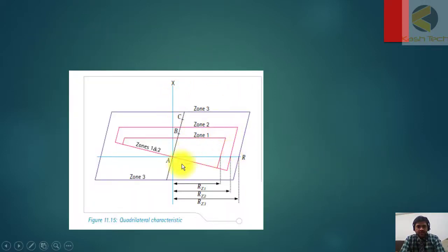Here you can see I have shown you the distance protection with some zones. This is zone 1 which is 80 to 85 percent of line 1. This is zone 2 which is 120 or 150 percent of line 2. This is zone 3 which is 225 percent of the line. These are examples. This is the mho characteristic.